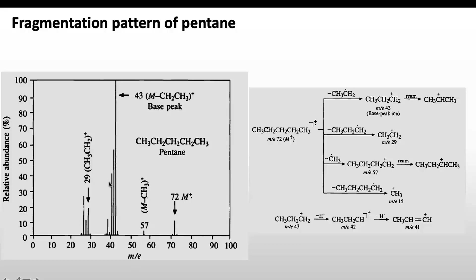We will now go through the mechanism to explain these peaks. The molecular ion shows a peak at 72. It may lose a CH3CH2 group first, giving a peak at 43, which is the base peak. If it loses CH3CH2CH2CH2, it shows a peak at 29. If it loses only one CH3, it shows a peak at 57. If it loses CH3CH2CH2CH2CH2, we would see only the methyl cation at 15, but this is not significantly formed.